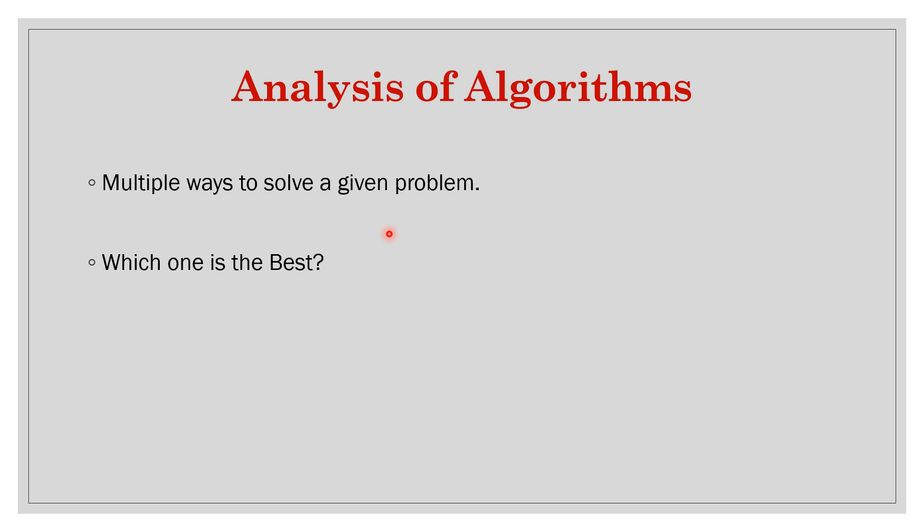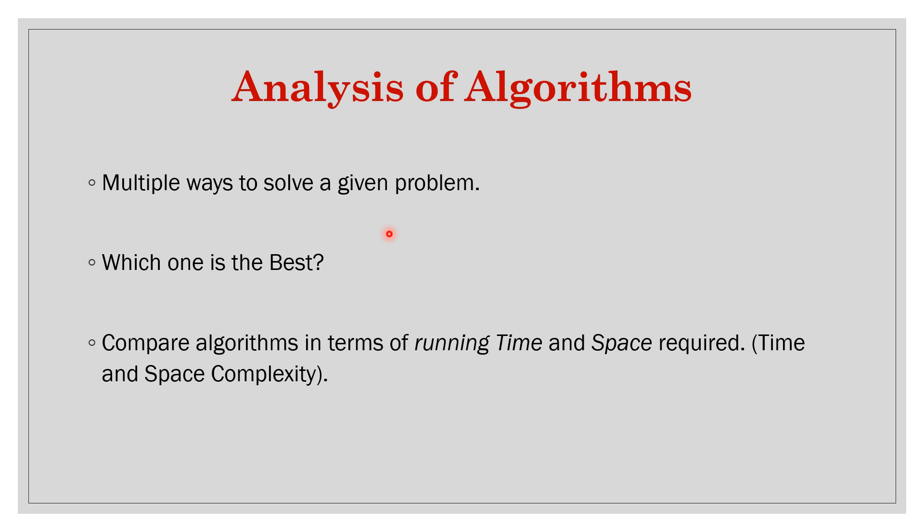So which one is the best? This is essentially what analyzing algorithms means — we compare them. But how can we compare them? Do we measure using a timer and say this algorithm took 10 milliseconds and the other took 5 milliseconds? Maybe the algorithm that took 10 milliseconds ran on a more powerful computer, or maybe if we increase the length of input, that 10-millisecond algorithm takes only 15 milliseconds while the other starts taking 50 or 60 milliseconds.